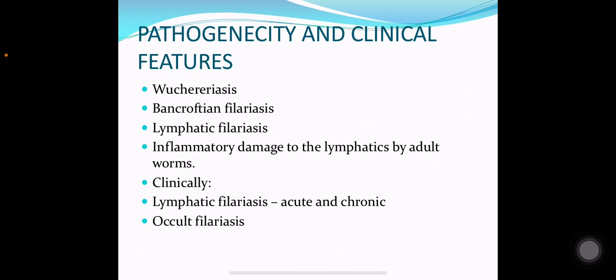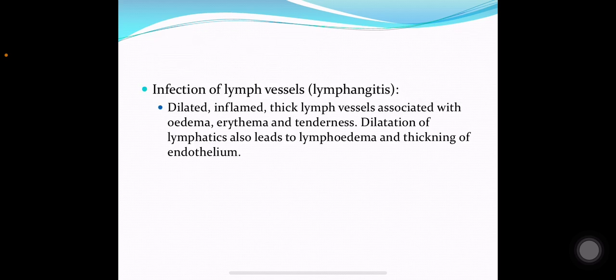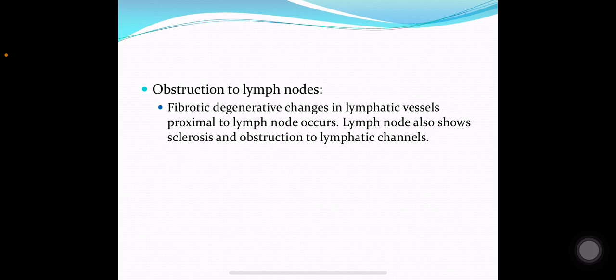Pathogenicity and clinical features: Wuchereria bancrofti causes Bancroftian filariasis or lymphatic filariasis. It causes inflammatory damage to the lymphatics by the adult worms. Clinically, lymphatic filariasis can be acute or chronic and can also lead to occult filariasis. Dilatation of lymph vessels takes place due to inflammatory reactions provoked by the adult worms, developing larvae, metabolic products released during molting, and the immune reaction of the host. This leads to lymphangitis, with dilated, inflamed and thick lymph vessels associated with edema, erythema and tenderness. Dilatation of lymphatics also leads to lymphedema, thickening of endothelium, obstruction of lymph nodes, fibrotic degenerative changes in lymphatic vessels proximal to lymph nodes, and sclerosis of lymphatic channels.